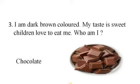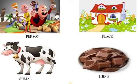Yahaan par dekh rahe ho — person kaun hai? Yes, Motu or Patlu. Place? Aapka ghar, yani ki home. Animal — cow. Aur thing kya hai? Chocolate.